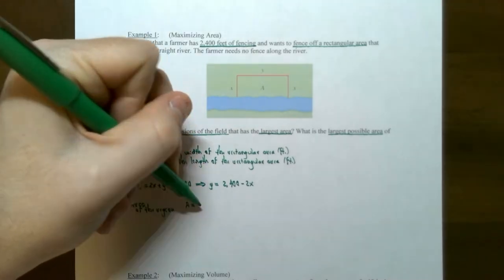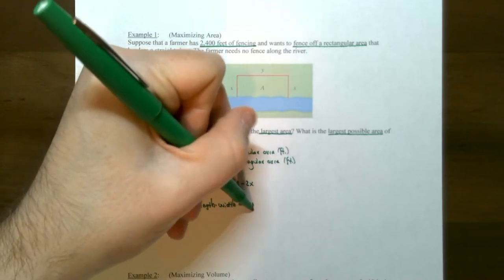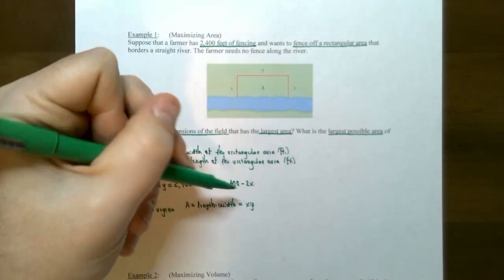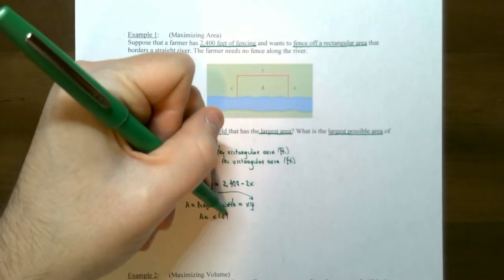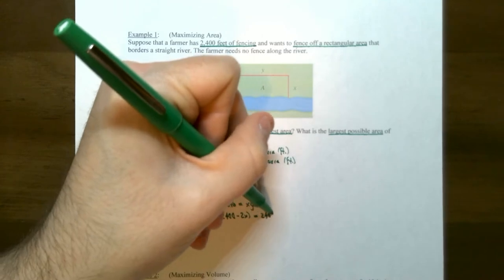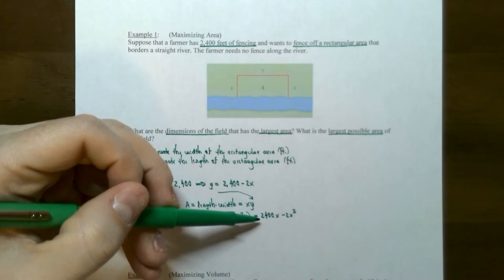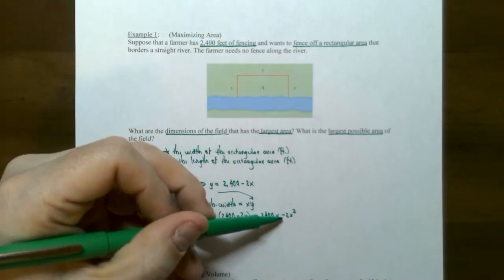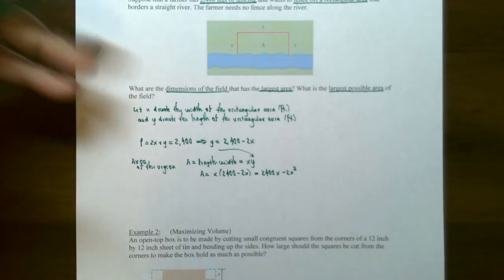The area is what's being maximized. Area equals length times width, which is x times y in terms of the diagram. But this has two variables, so replace y with 2400 − 2x. So x times (2400 − 2x) gives us A(x) = 2400x − 2x². That's the quadratic function representing the area. In pre-calculus you'd find the maximum by finding the vertex, since the graph opens down, but let's use calculus methods.